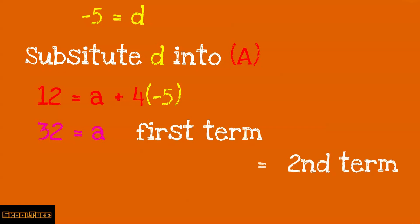Let's say you want to solve for the second term, t2. You're going to say 32 plus minus 5. And this is going to give you the final answer of 27.